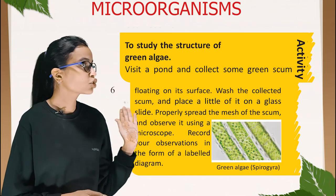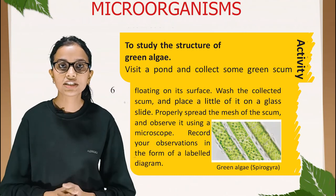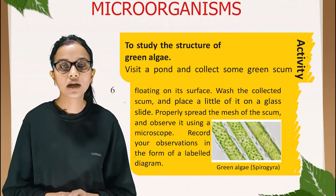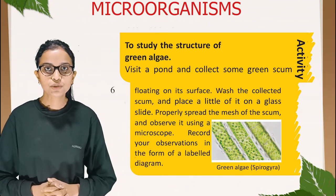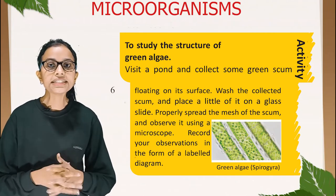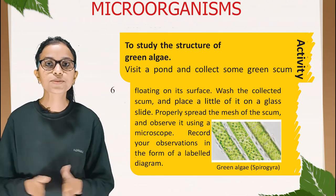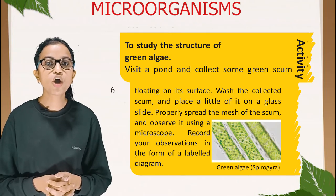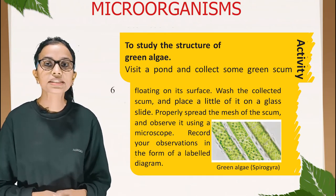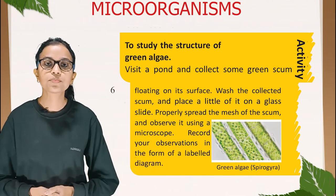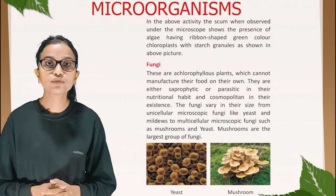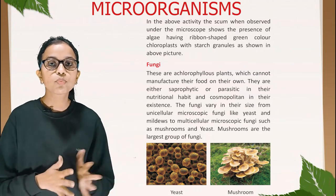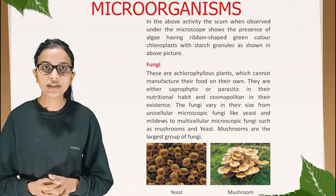Activity: to study the structure of green algae, visit a pond and collect some green scum floating on its surface. Wash the collected scum and place a little of it on a glass slide. Properly spread the material and observe it under a microscope. This picture shows green algae — Spirogyra. The scum observed under the microscope shows the presence of algae having ribbon-shaped green chloroplasts with starch granules.